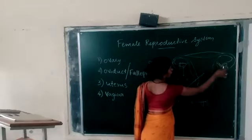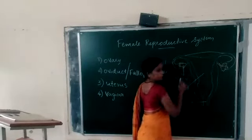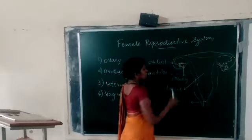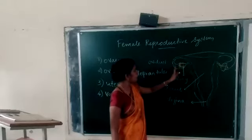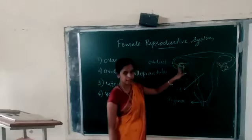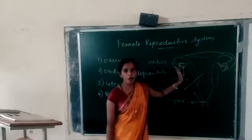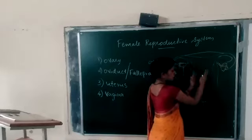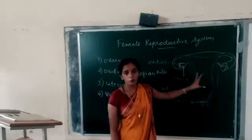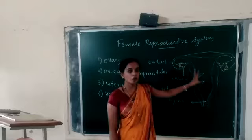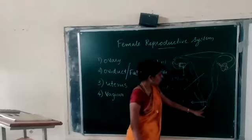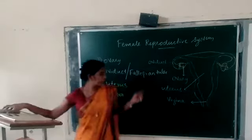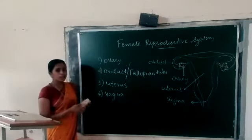You can see a pair of ovaries. Then the oviduct, or Fallopian tube — that is a tube-like portion arising from the ovary. That portion is called the oviduct or Fallopian tube. Then there is the uterus, otherwise known as the womb. And the last portion is the vagina.